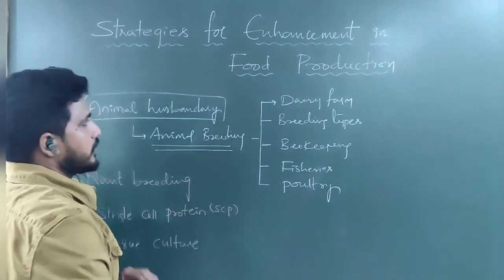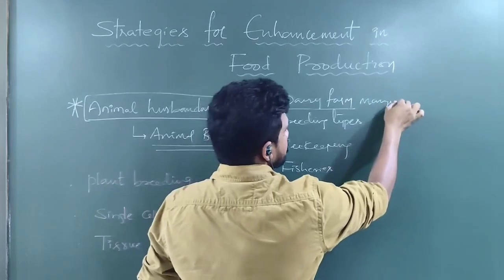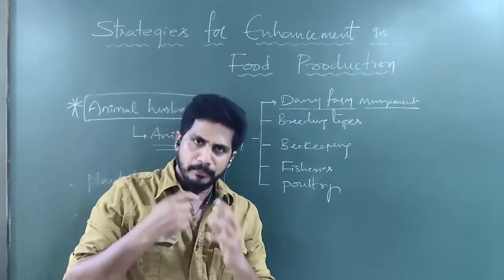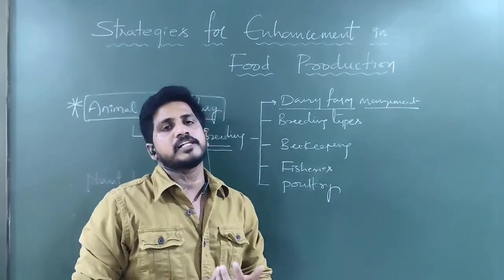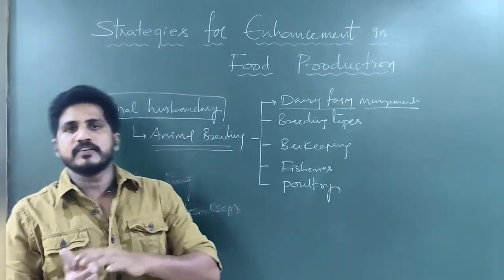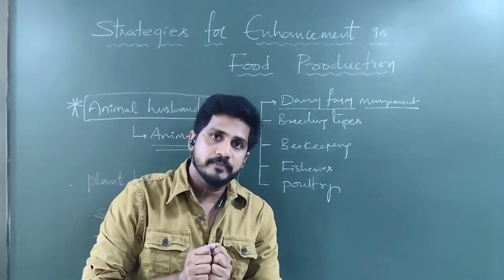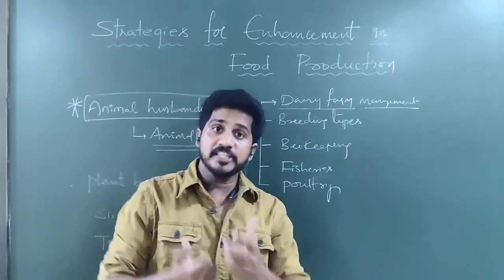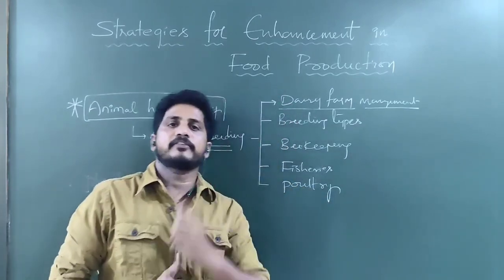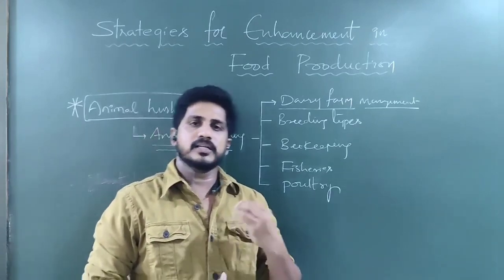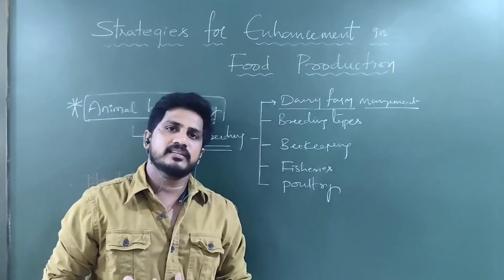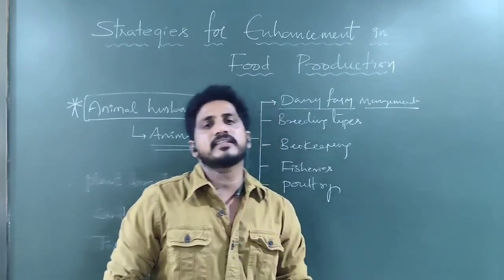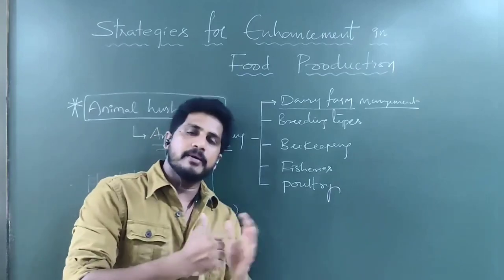In dairy farm management, we need to discuss what types of breeds to select — milk-producing breeds and agriculture-supporting breeds. From bulls and cows, what type of superior breeds are there? Disease-resistant bulls are important to select. For example, Jersey cows and Red Sindhi bulls are crossbred for milk yield. We'll also discuss how many milky breeds exist in India from both the cow and buffalo departments.